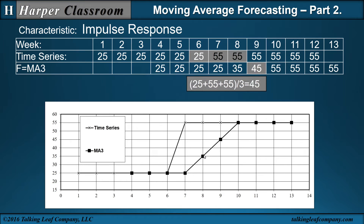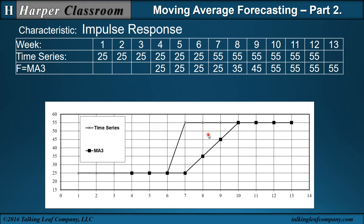We plot it. Then for time period 9 we have 45. Then finally we hit all three 55s and we have 55. So when we look at this time series where we applied our three-point moving average, when the impulse happened, the MA3 responded to it. But once it happened, it took one, two, three time periods to respond, and that's called response time. Notice that's the same as the window — the moving average window is the same as the response time to an impulse.